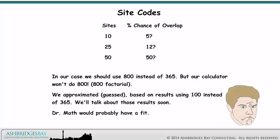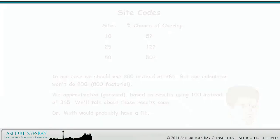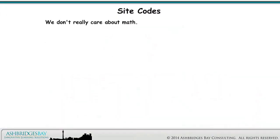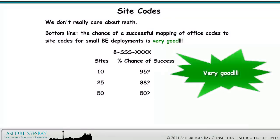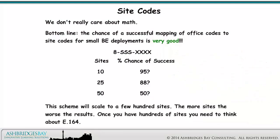We'll talk about those results soon. Bottom line: the chance of a successful mapping of office codes to site codes for small BE deployments is very good. This scheme will scale to a few hundred sites. The more sites, the worse the results. Once you have hundreds of sites, you need to think about E.164.